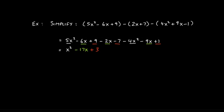Next, for the x terms: negative 6x minus 2x is negative 8x, and then negative 8x minus 9x gives negative 17x. Finally for the constants: 9 minus 7 is 2, and 2 plus 1 is 3. So the simplified answer is x squared minus 17x plus 3. If you simplify all three polynomials by distributing the negatives and combining like terms, that's the final answer. If you have any questions, please feel free to reach out.